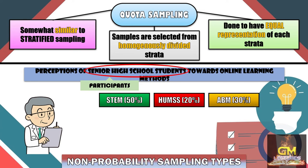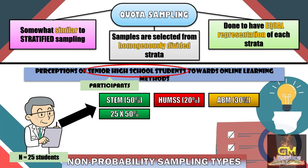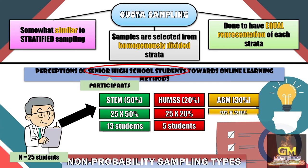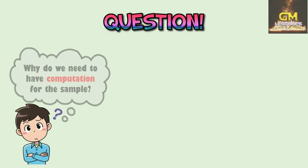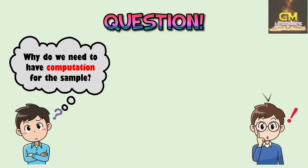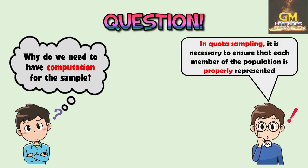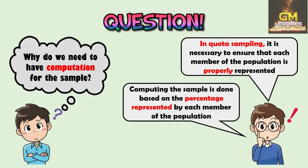Say for example, we need 25 students for this particular study. We then compute 25 students based on the percentage of each particular strand. For STEM, we have 13 students; for HUMSS, we have 5 students; and for ABM, we have 7 students — which would total to 25 students in accordance with what is needed. In quota sampling, it is necessary to ensure that each member of the population is properly represented. As such, computing the sample is done based on the percentage represented by each member of the population — depending on the percentage, the number of participants would then be identified.